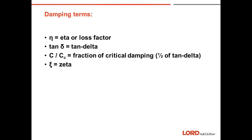Some of the common terms for damping are eta, or loss factor; tan delta, which we measure here at Lord Corporation; C over C sub C, which is the fraction of critical damping — that would be one half of our tan delta number that we use here — and zeta. These are the common terms for damping.